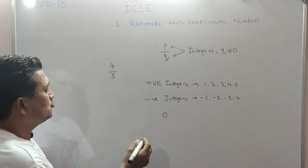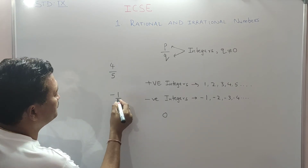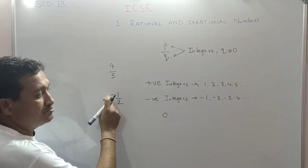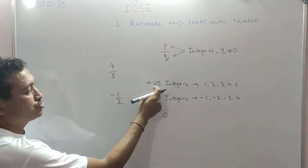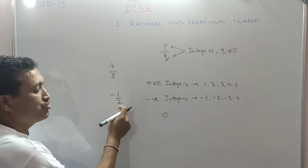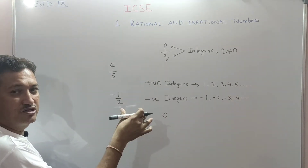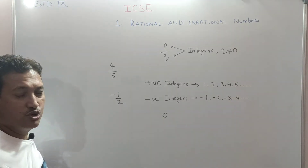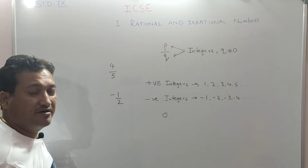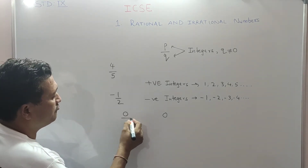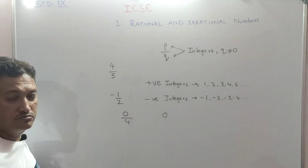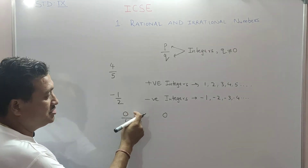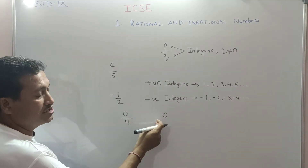Let's see some more examples. Minus 1 upon 2 — minus one is a negative integer and two is a positive integer, so numerator and denominator are both integers and the denominator is not zero. Hence, minus 1 upon 2 is also a rational number. What about 0 upon 4? Zero is an integer and four is also an integer, so numerator and denominator are both integers.